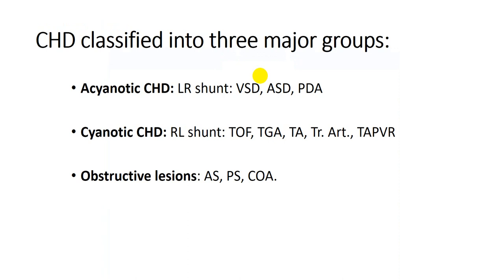Congenital heart disease is classified into three major groups according to its pathophysiology. The first group is left-to-right shunt, also called acyanotic congenital heart disease. Examples include VSD (ventricular septal defect), ASD (atrial septal defect), and PDA (patent ductus arteriosus). The patient has a left-to-right shunt and is not cyanosed. The second group is cyanotic congenital heart disease, where there is a right-to-left shunt, as in tetralogy of Fallot, transposition of the great arteries, truncus arteriosus, and total anomalous pulmonary venous return. The third group is obstructive lesions — for example, aortic stenosis, pulmonary stenosis, and coarctation of the aorta.